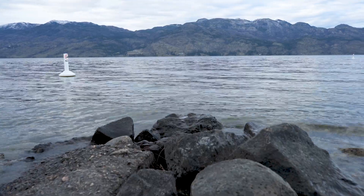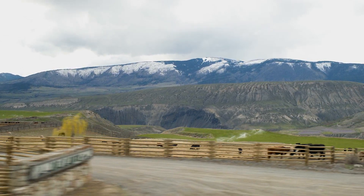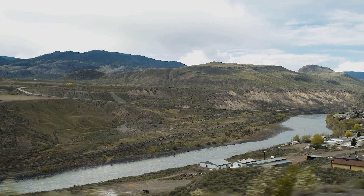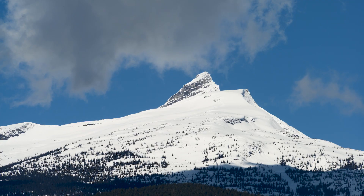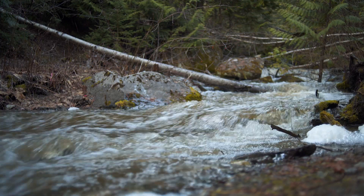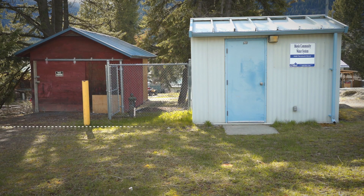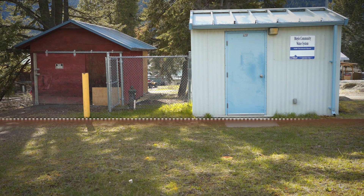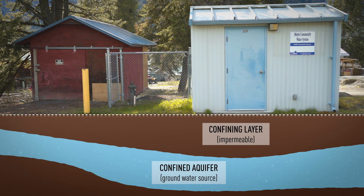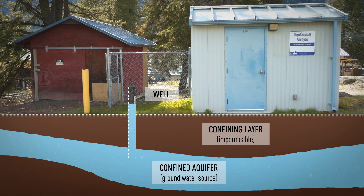There are two primary sources for our water: surface and groundwater sources. Surface water is all the above-ground water — it's the snow on mountains, the waters in streams, rivers, ponds and lakes. Groundwater is the water that has moved below ground into aquifers. Aquifers are like sponges in the way they absorb water and hold it underground.